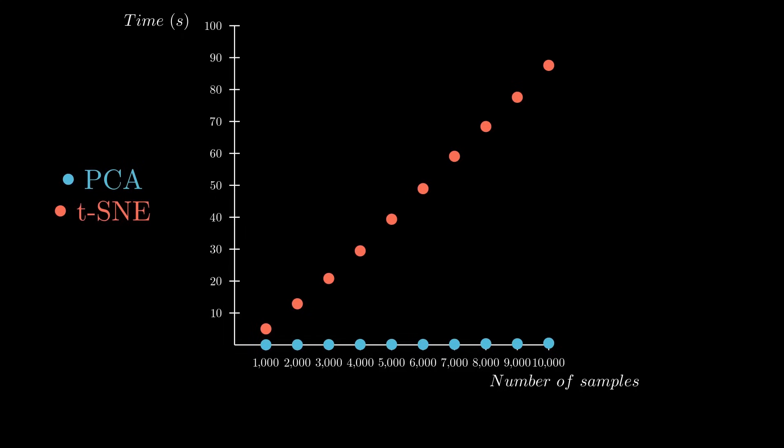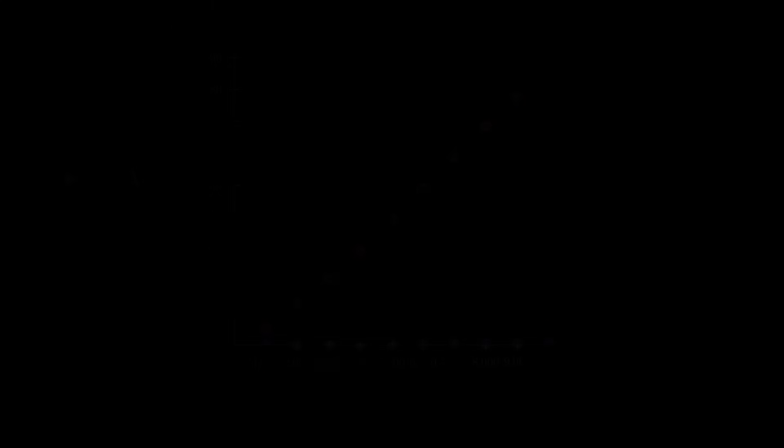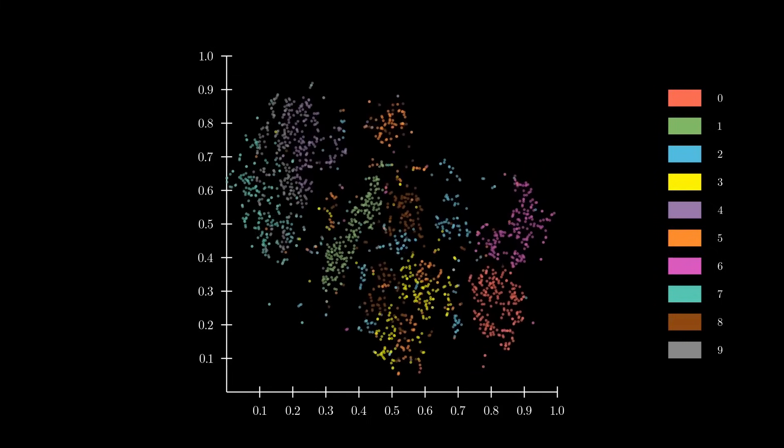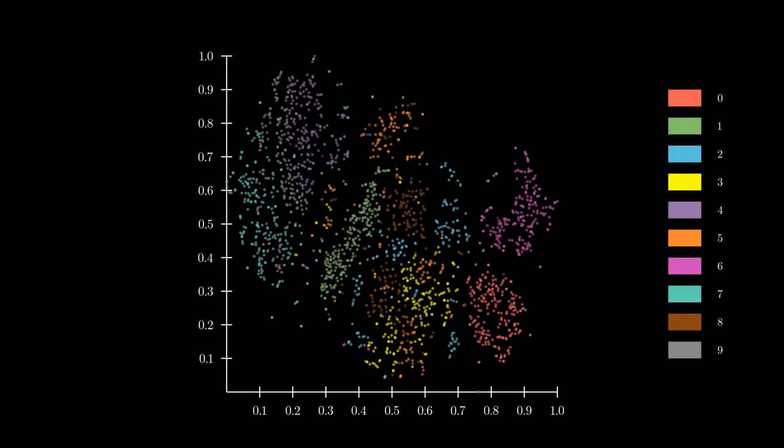Another drawback of t-SNE is the perplexity hyperparameter. The big problem with perplexity is that changing this parameter even a little can completely mess up our visualization. For instance, here we just went from a perplexity of 30 to a perplexity of 31, and many clusters have completely changed. This means that when using t-SNE, we have to check the visualization each time we change the perplexity until we get a good representation, which is very time-consuming. And the bigger the perplexity, the slower the algorithm runs, making it even harder to tune this parameter.